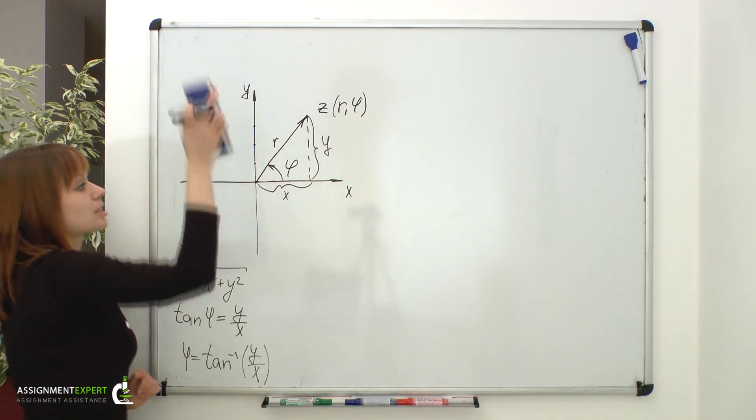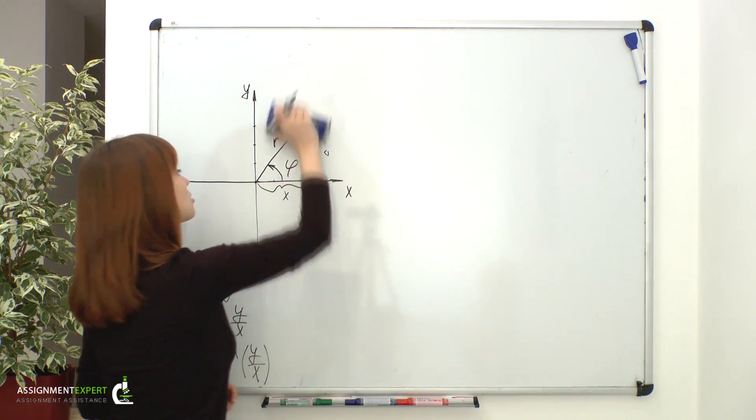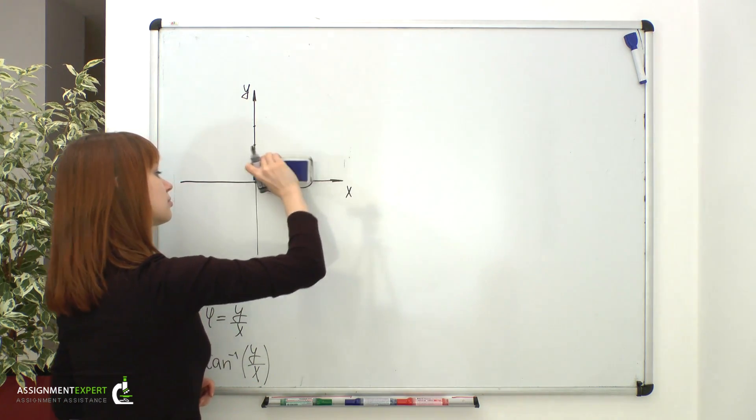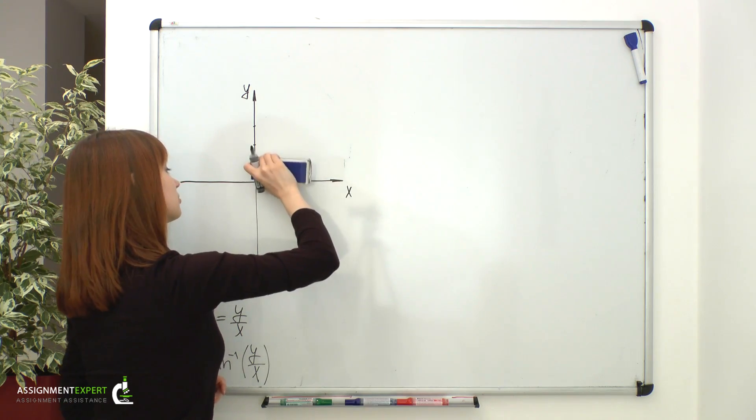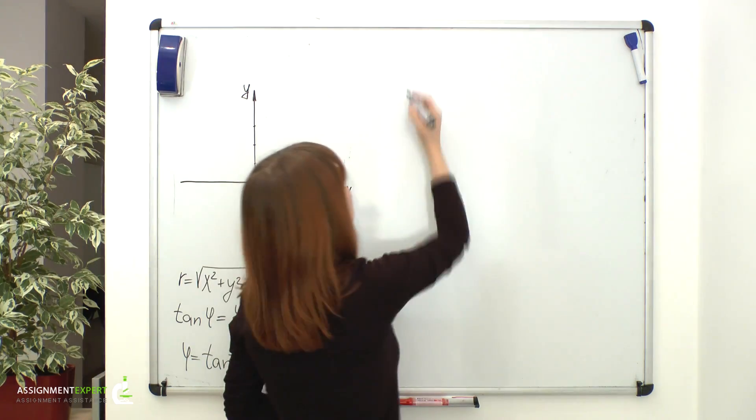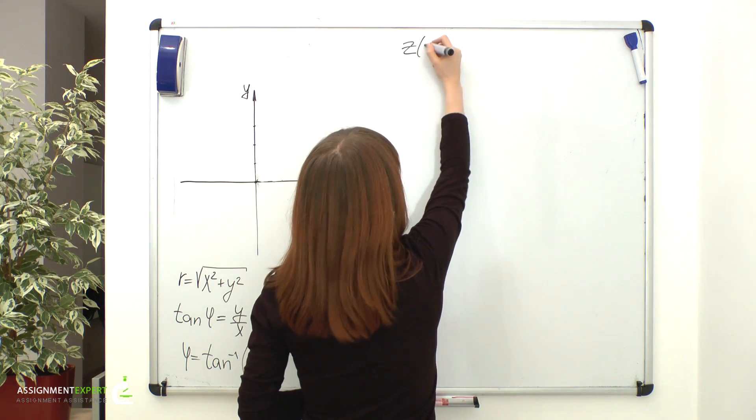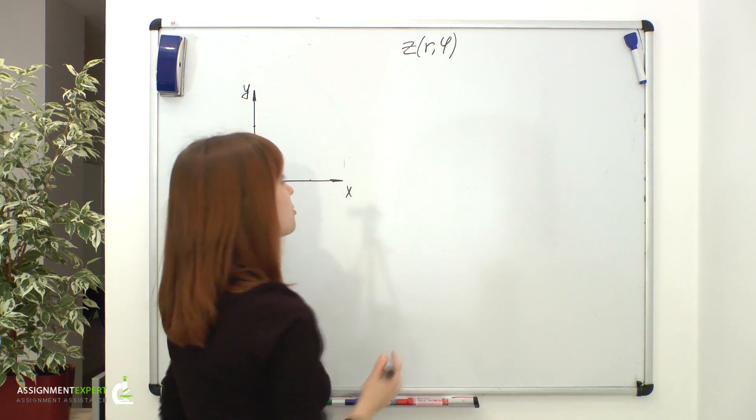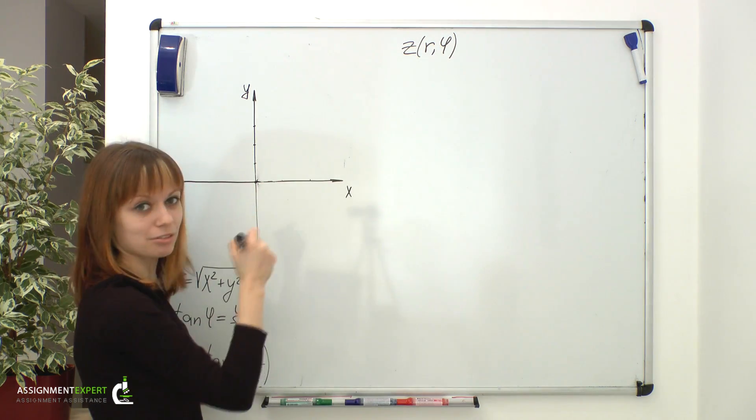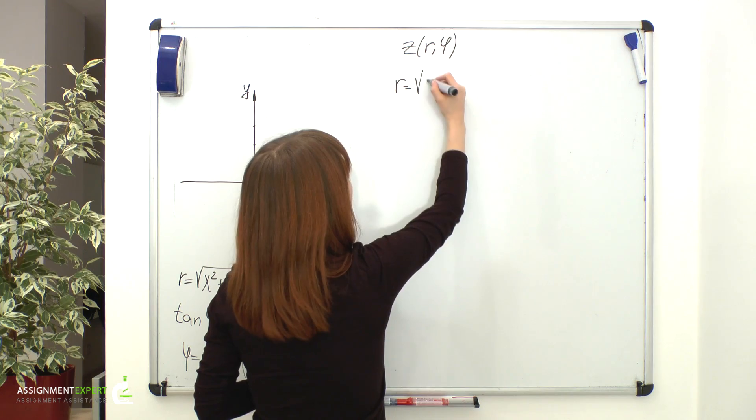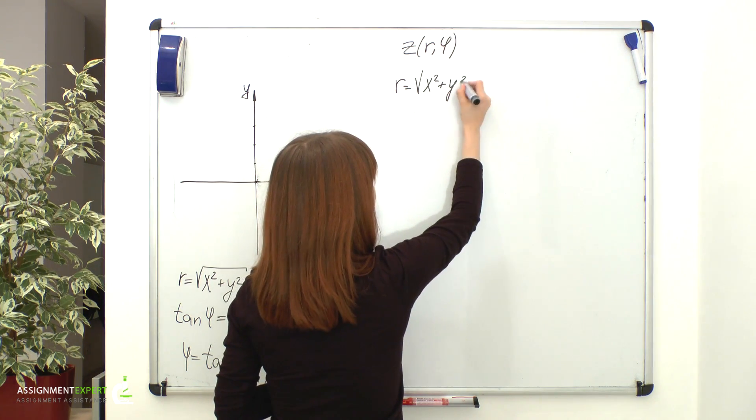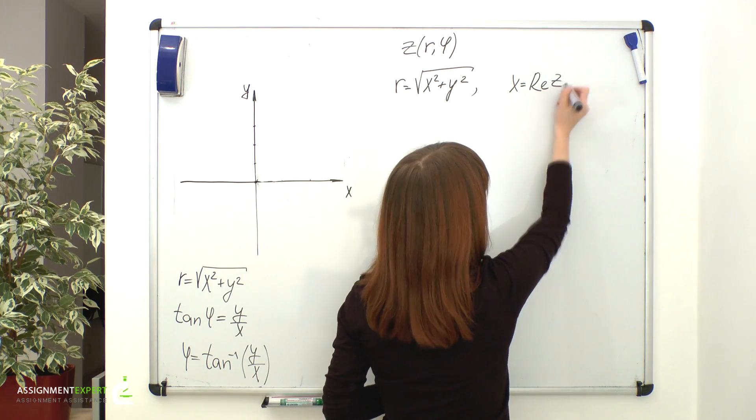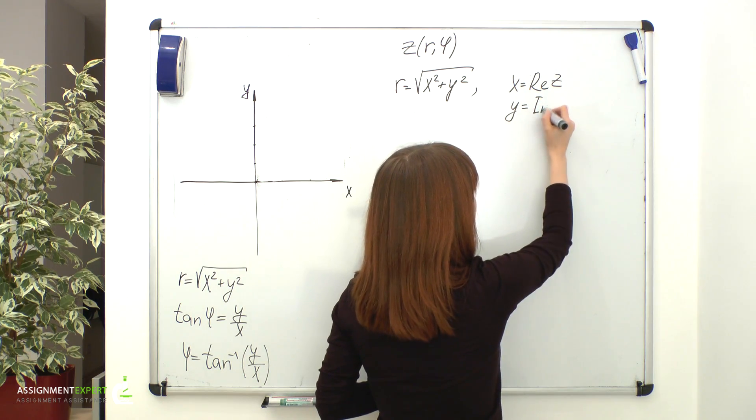Like we looked at complex numbers as points on the plane from rectangular coordinates, we can do so through polar coordinates as well. So a complex number may be given as a pair of two coordinates, R and phi, where R is the absolute value of this complex number, or the distance from this point to the origin, found as square root of x squared plus y squared, where x is the real part of z and y is the imaginary part of z.